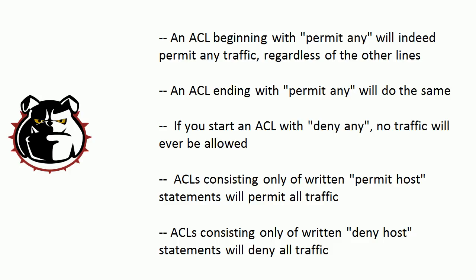Fourth, ACLs consisting only of written permit host statements will permit all traffic — that's false. You could have 20 permit host statements permitting specific IP addresses, but then what do we have at the end of every ACL? This is another rule we have to keep down — the implicit deny. The way I've always remembered it: if traffic is not expressly permitted, it is implicitly denied. If you don't see it being permitted in that ACL, then it's not being permitted, and if it's not being permitted, it's got to be denied.